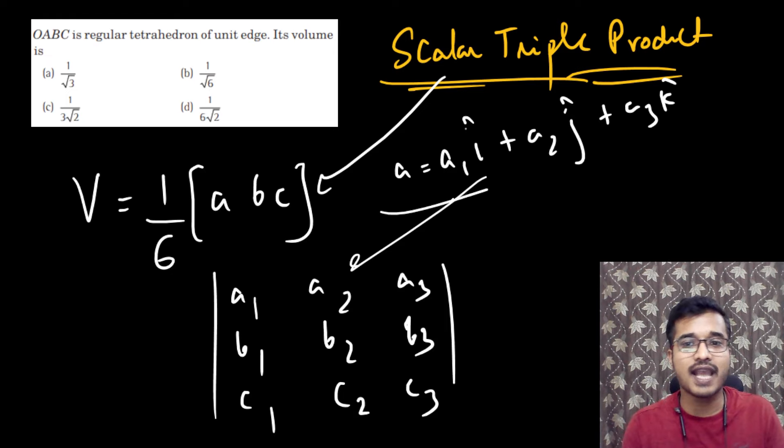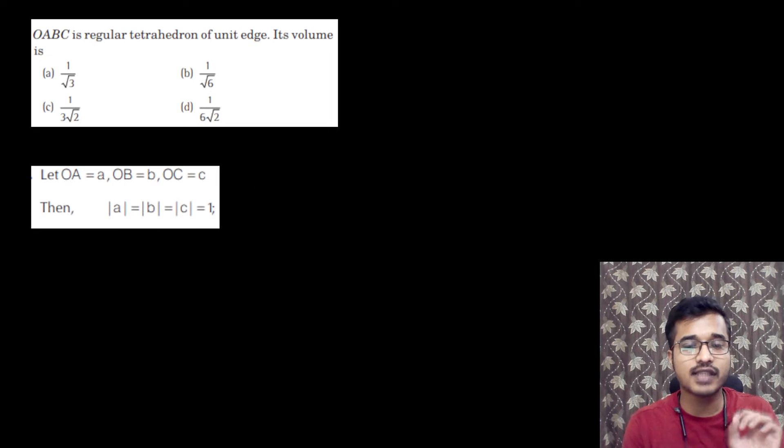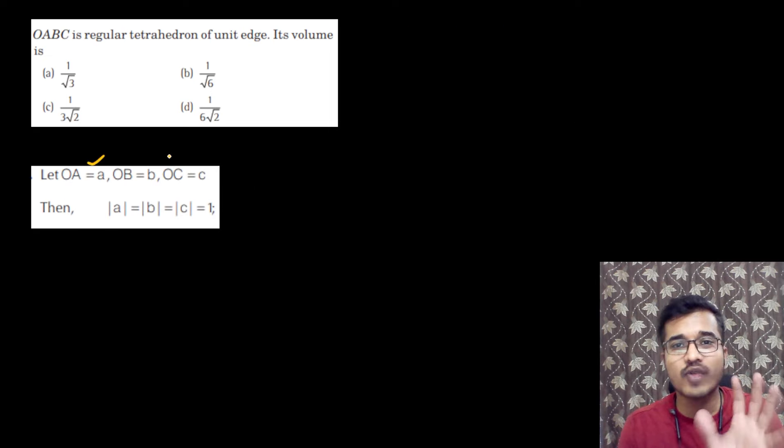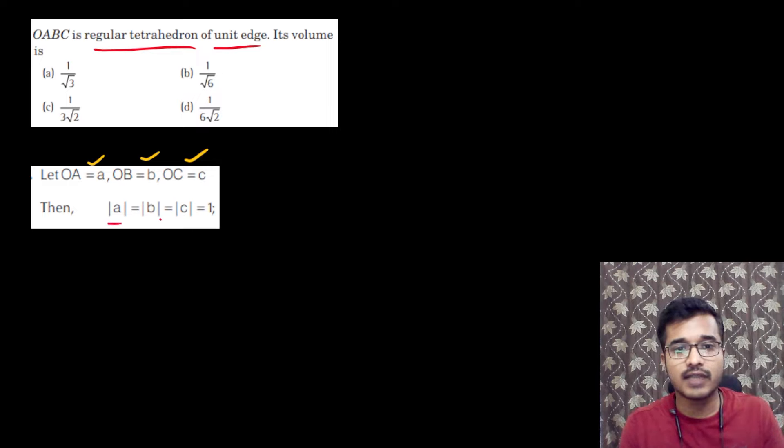But in this question, we will have to understand some things here. In such a vector form, there are no things in such a vector. So basically, we will have an approach with you. First of all, OA = A, OB = B, OC = C. Then, one thing you have already given here, is that the regular tetrahedron is unit edge. That means, the length of each edge will be equal to 1.